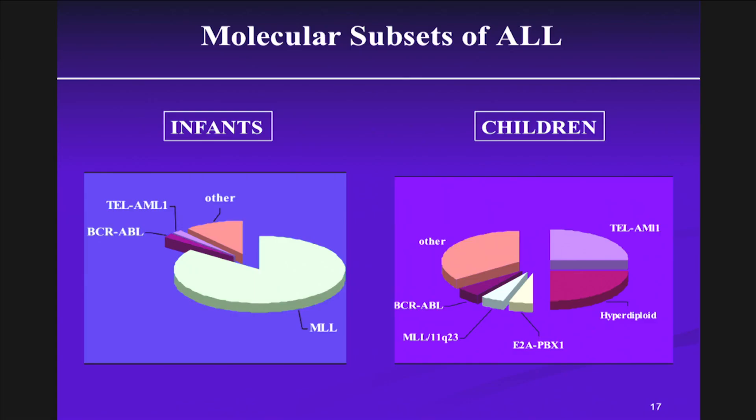We know that the molecular subtypes of leukemia in children are also different than the molecular subtypes in adults, as shown here. These differences are extremely important in our studies because we find that the response to environmental exposures appears to vary by the molecular subtype of leukemia.